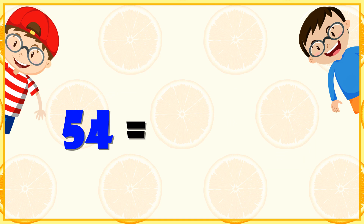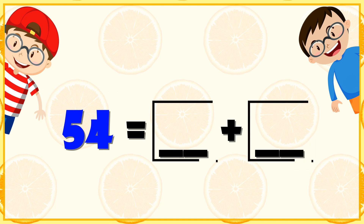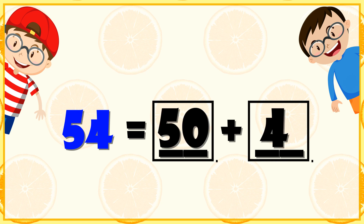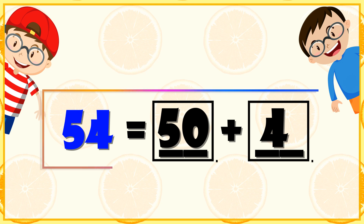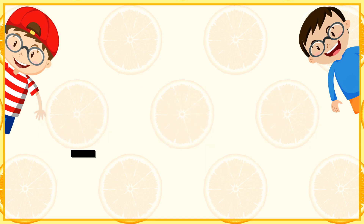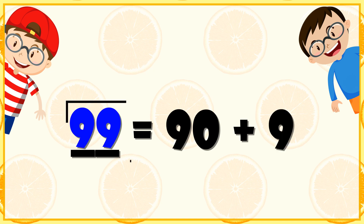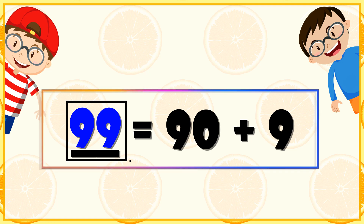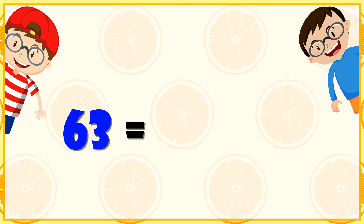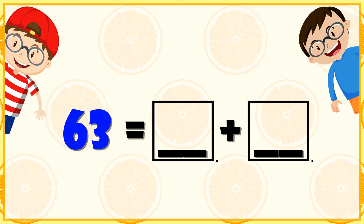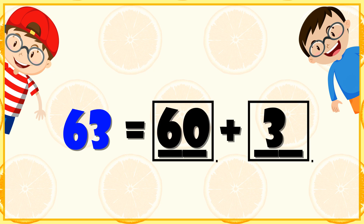54 is equal to dash plus dash. So what will come? 50 plus 4 will make 54. Next: dash is equal to 90 plus 9, so 90 plus 9 will make 99. 63 is equal to dash plus dash — 60 plus 3 will make 63.